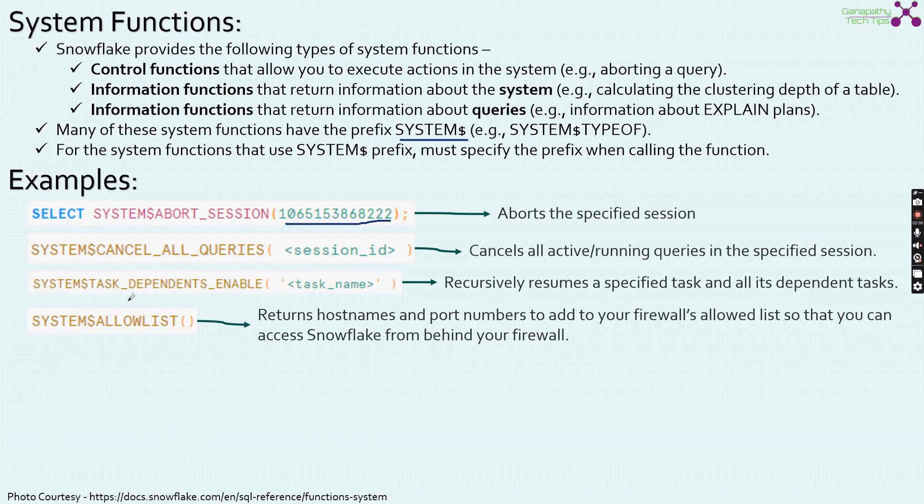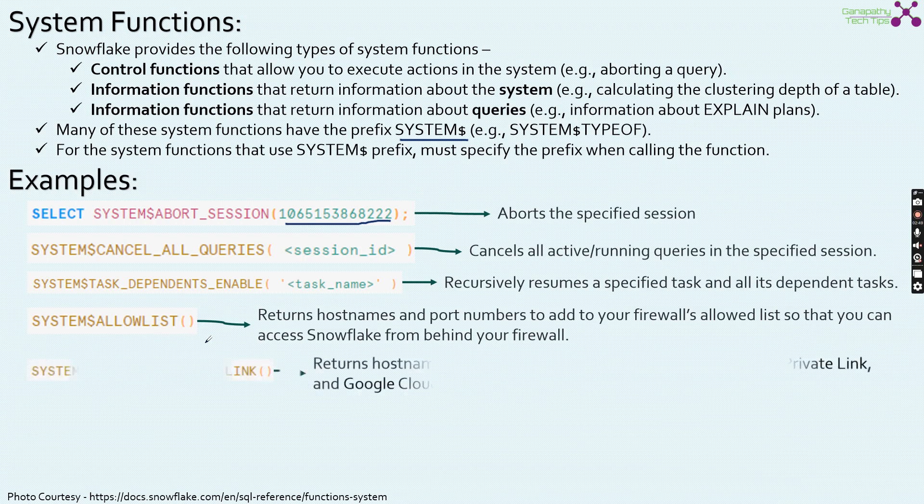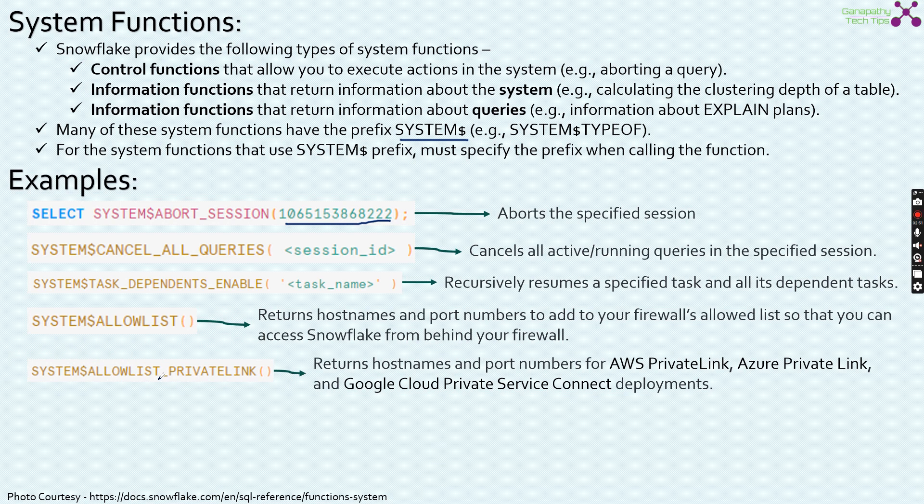System allow list, we already saw this in the SnowCD video. It returns the host names and port numbers that you can add to your firewalls allowed list so that you can access Snowflake from behind your firewall. And again another system allow list private link, this is all about the private connections from cloud service providers like AWS, Azure or GCP to Snowflake.